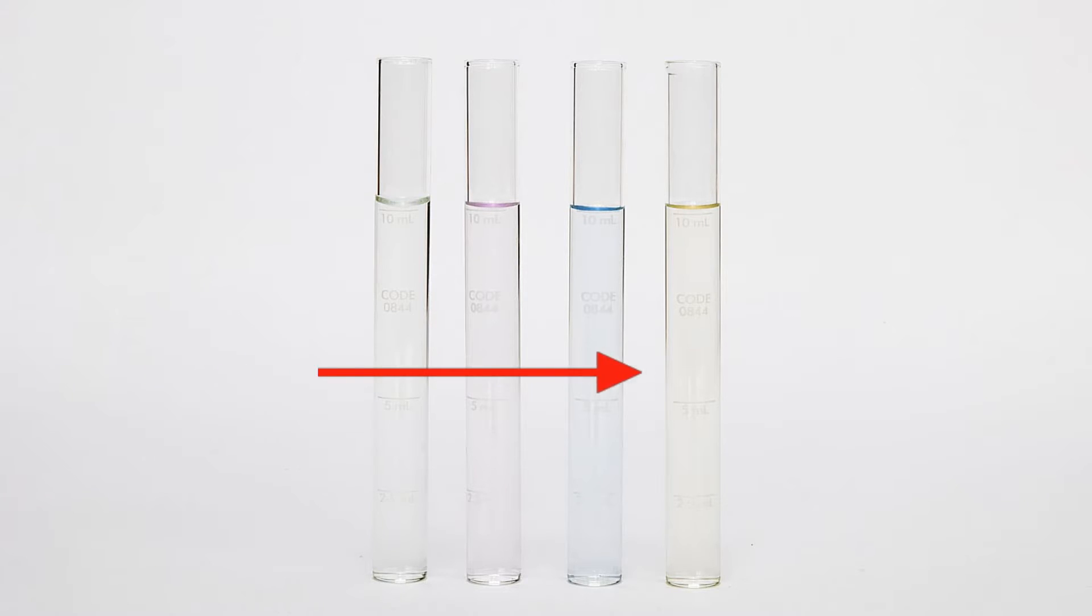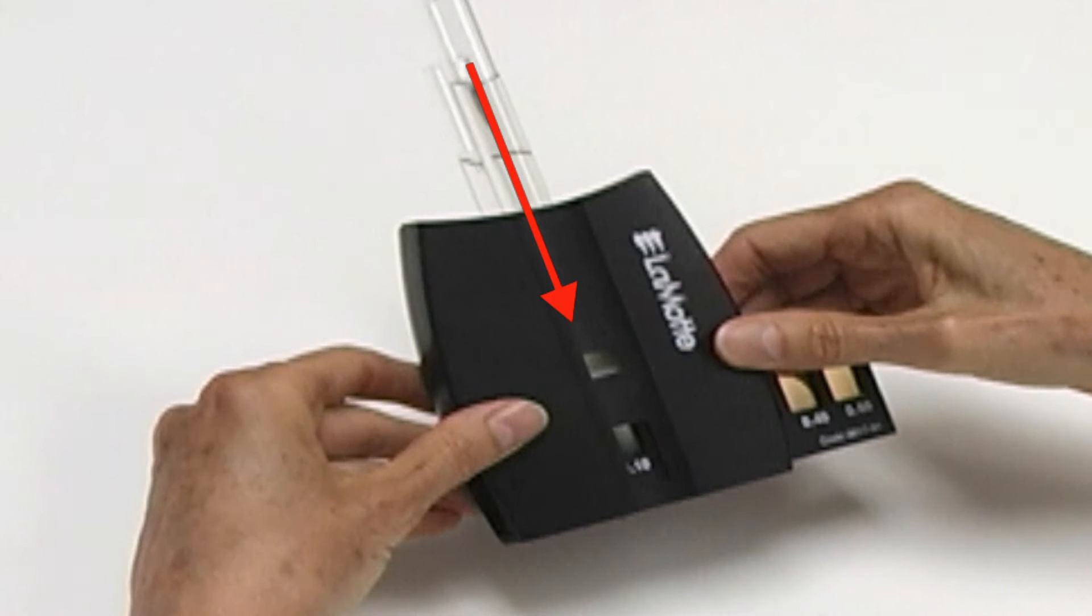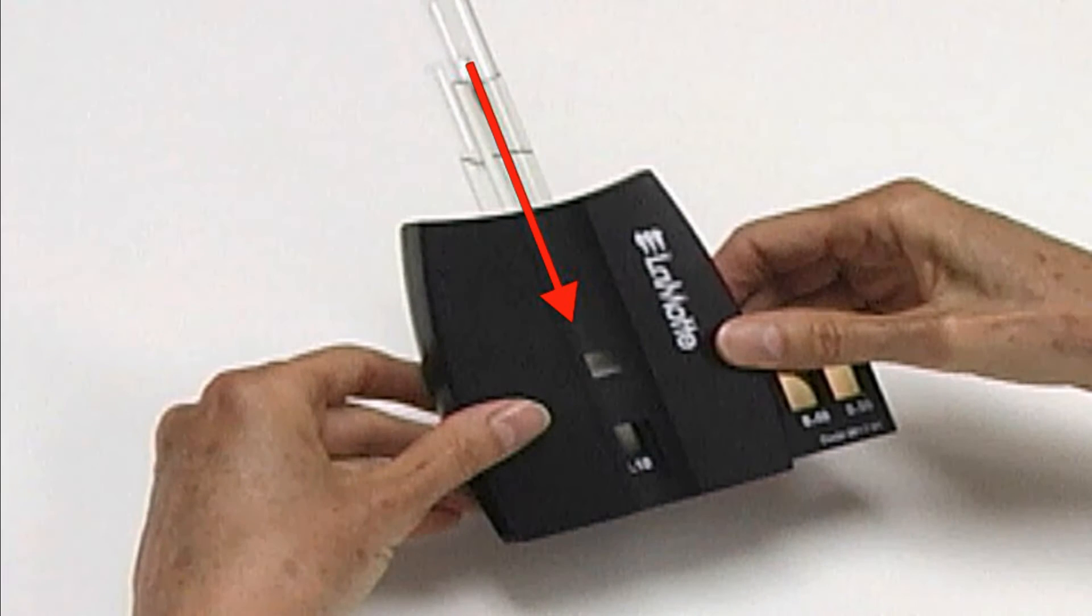When test reactions produce extremely faint colors, it's difficult to match colors looking across the diameter of a test tube. Using the low range comparator, the sample is viewed down the length of the tube. This increases the path length ten times and concentrates the color.